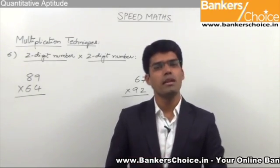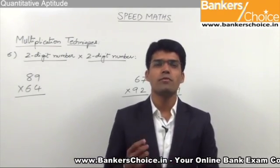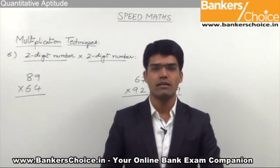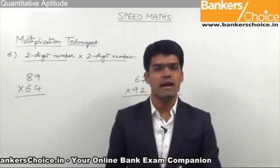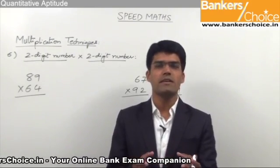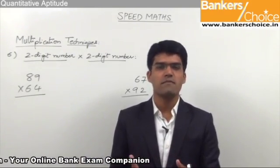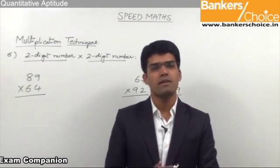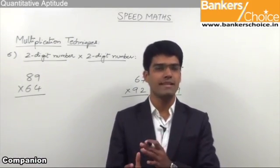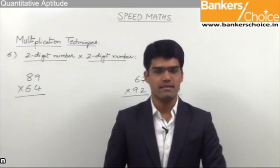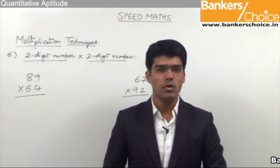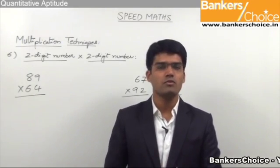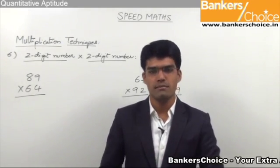Similarly, a plus b into a minus b is applicable only for those numbers where the difference between the two numbers is even. And likewise, multiplication with 5, multiplication with 25, or multiplication of numbers close to 100, numbers close to 1000, or multiplication of numbers with 11 to 90 — these are all special cases. But this particular technique that we are going to learn now is a general technique which will help us to multiply any type of two-digit numbers.